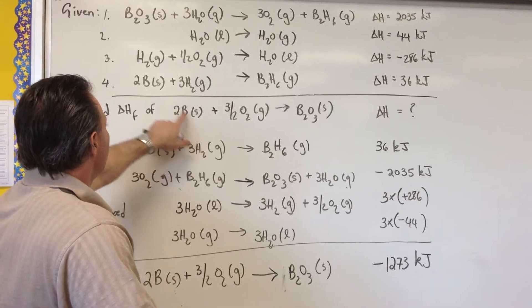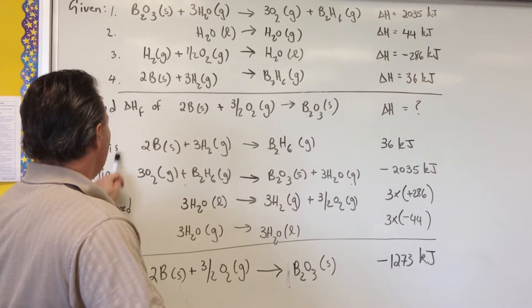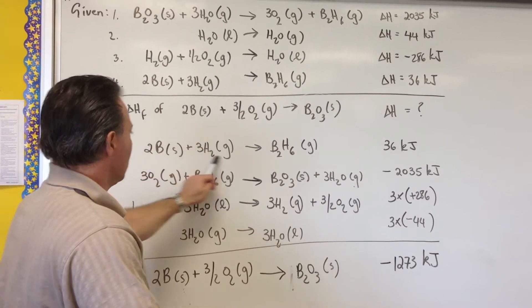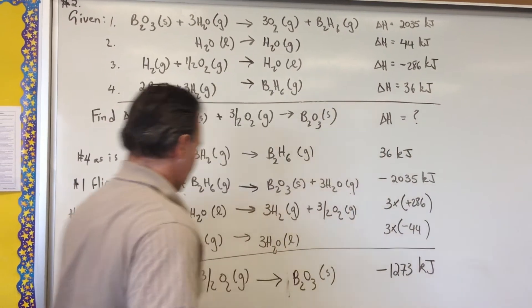The first step is to look at what we need to set up our target equation starting from these four other equations. We see that there's boron, and there's one equation that contains boron all by itself, equation number four. So what I did is I wrote equation number four as is, exactly the way it appears, and it has the same energy cost, 36 kilojoules.